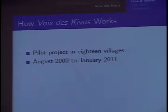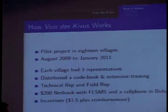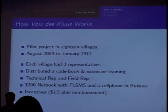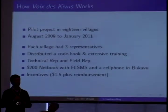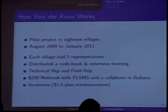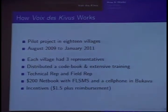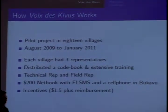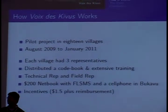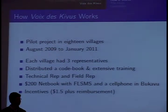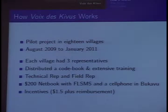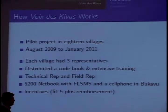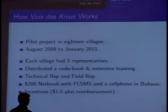Let me briefly touch upon the basics of this project. Each village had three representatives: the chief, the head of the women's association, and a democratically elected person. The villages were randomly selected. We distributed the code book and cell phones to those three people, and gave them very extensive training on how to use a cell phone and what kind of events to report. We had a technical representative and a field representative in Bukavu. All this worked with a very cheap small netbook, cheap cell phones, and all free software programs.